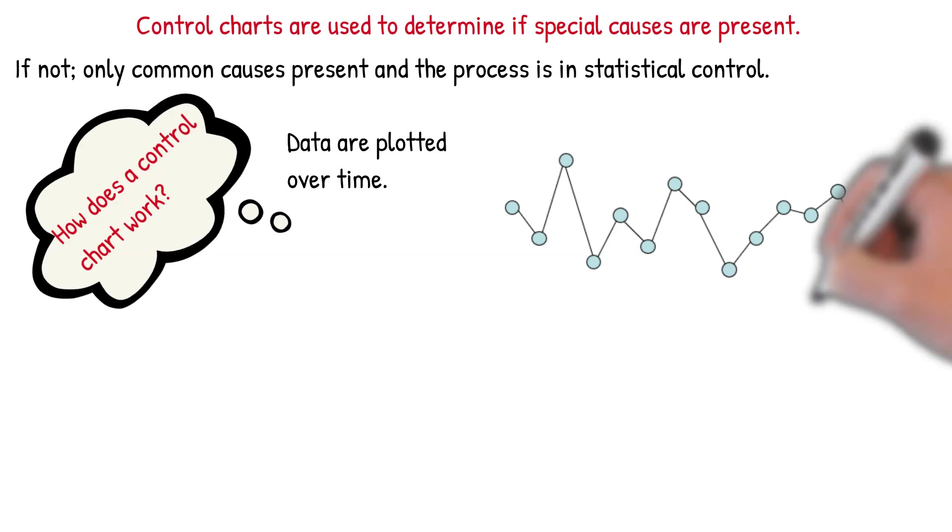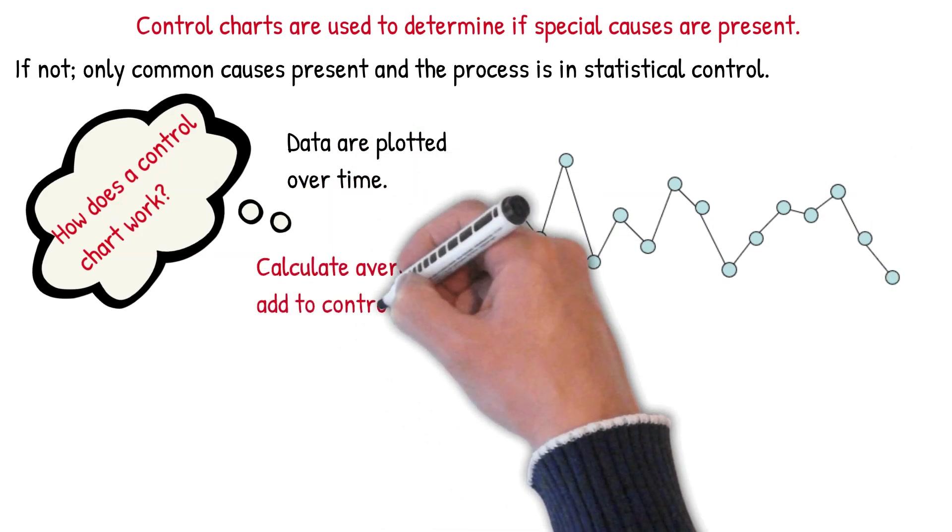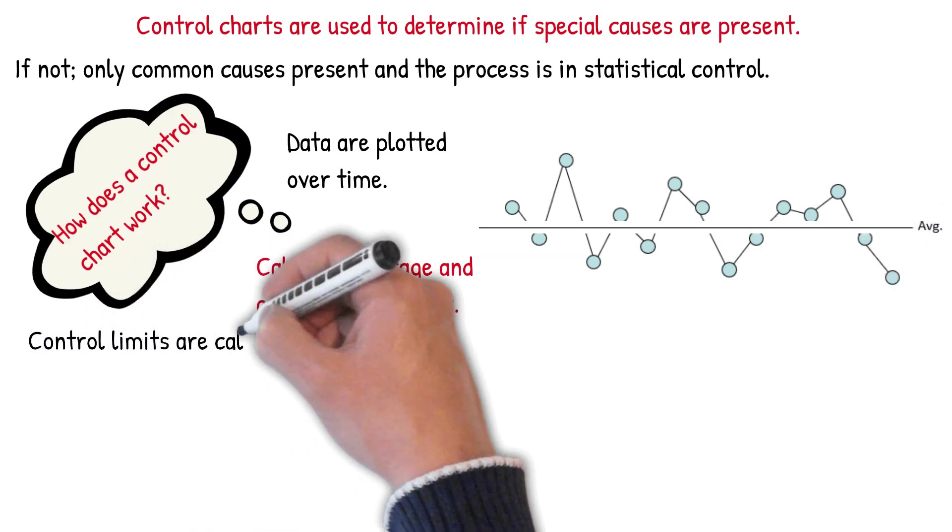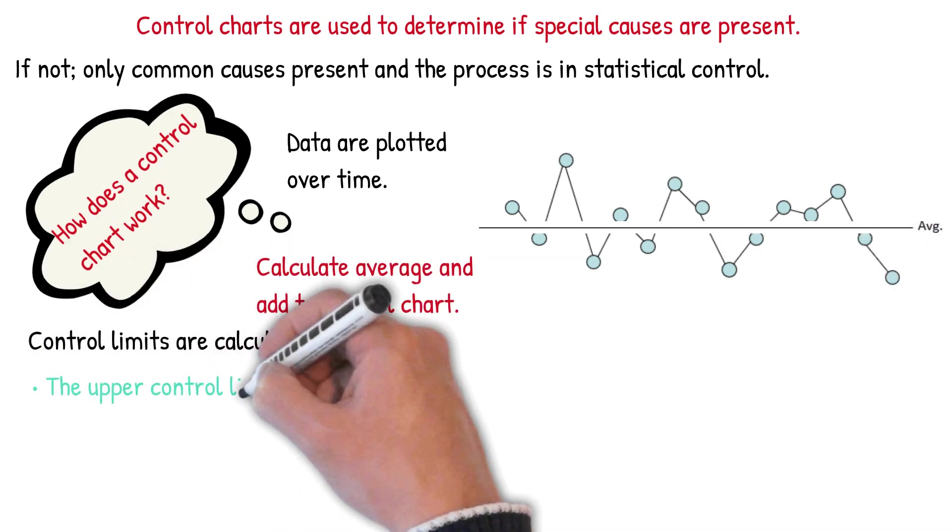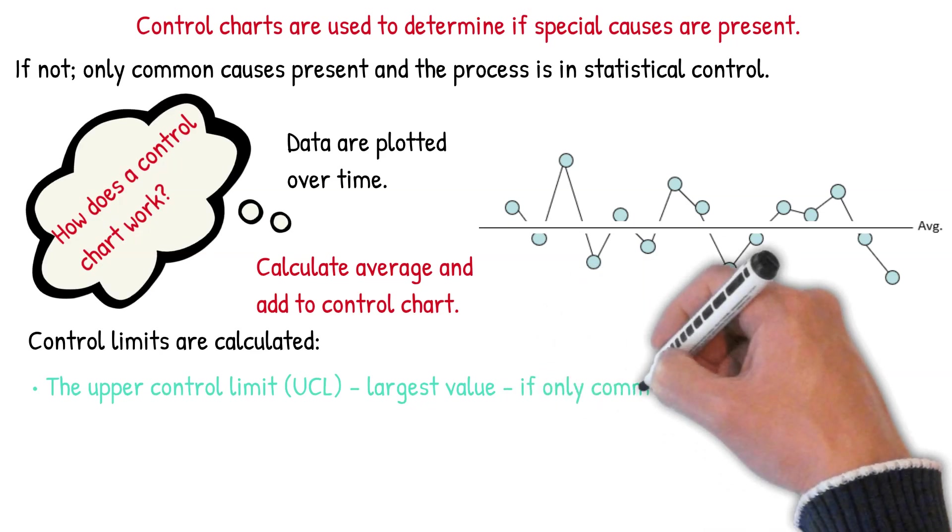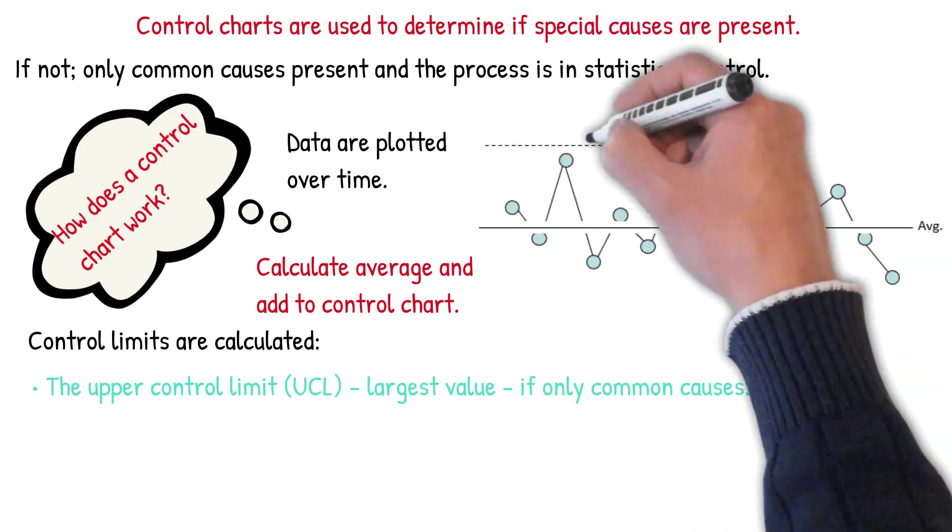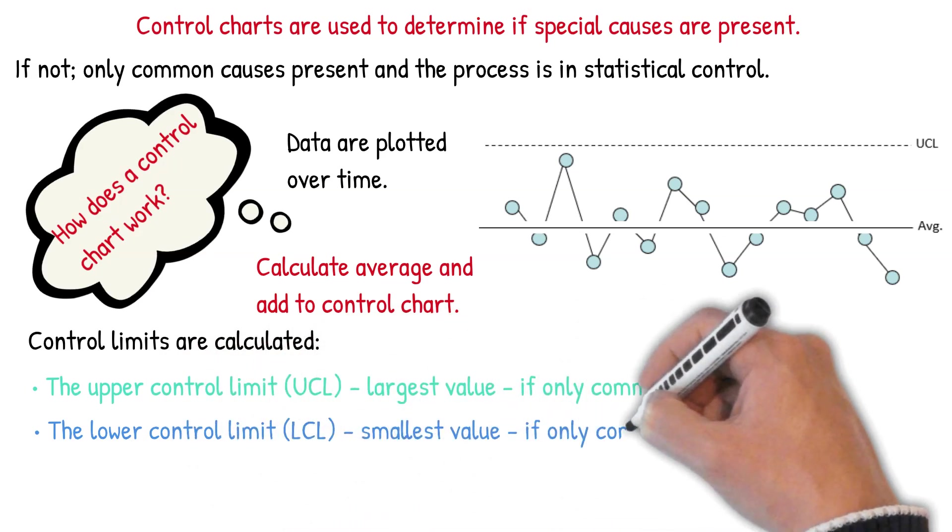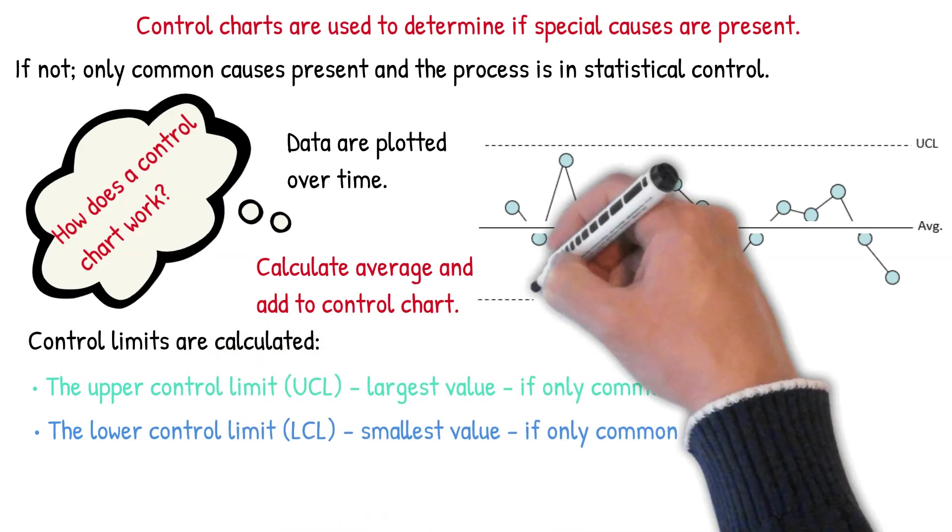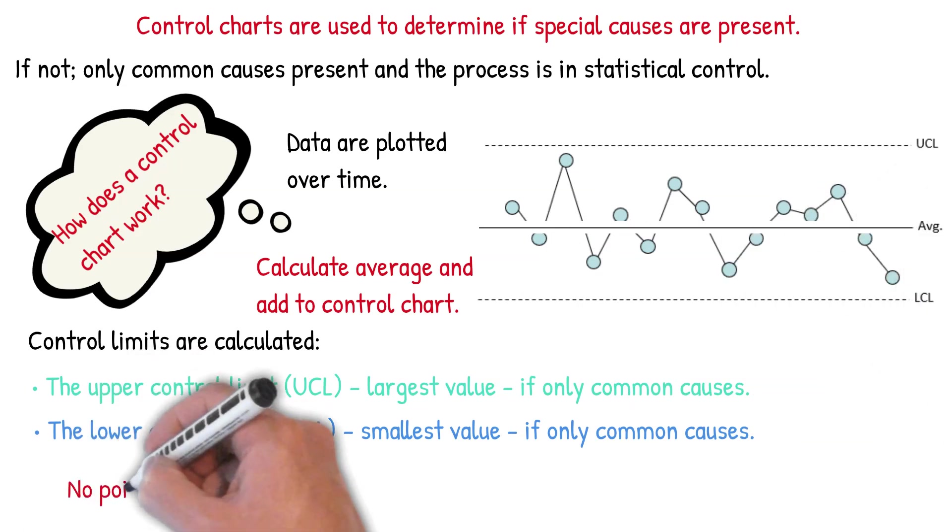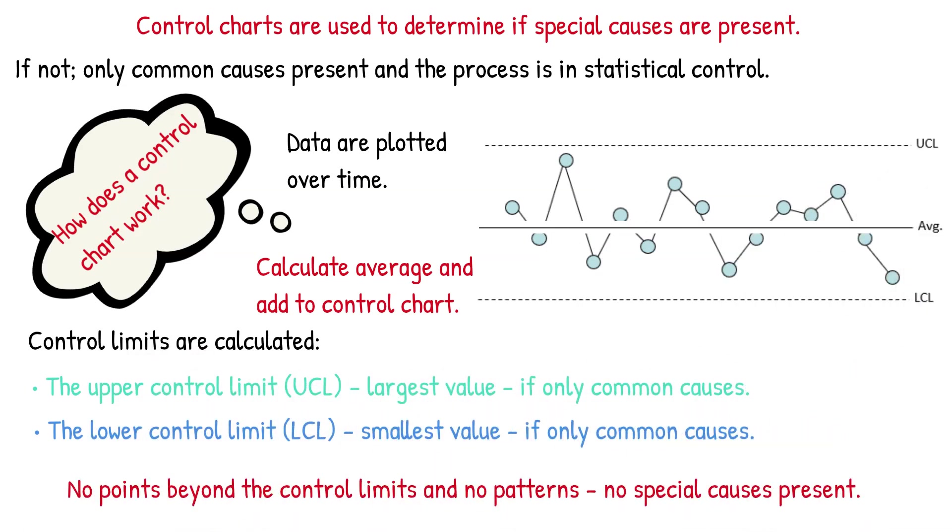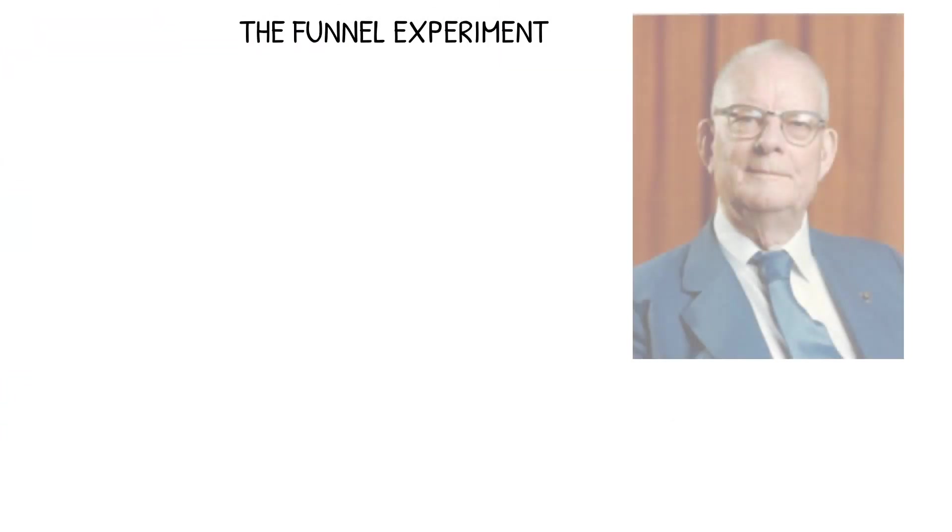So how does a control chart work? Well, you plot your data over time. You calculate the average and add it to the control chart. And then you're going to calculate the control limits and add those. The upper control limit, the UCL, is the largest value you'd expect if you just have common causes of variation present, that natural variation in your process. The lower control limit is the smallest value you would expect, the LCL, if you only have common causes of variation present. So no points beyond the control limits and no patterns mean your process is in statistical control.